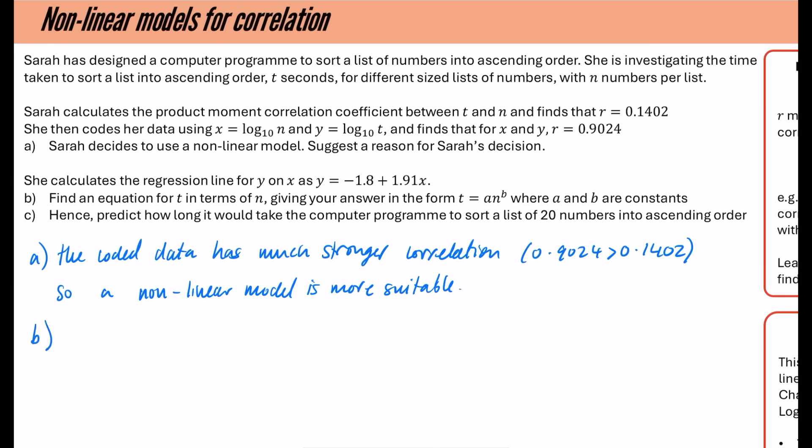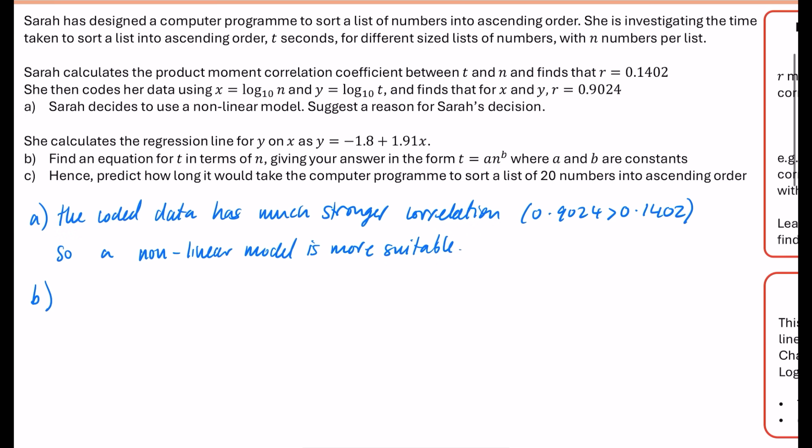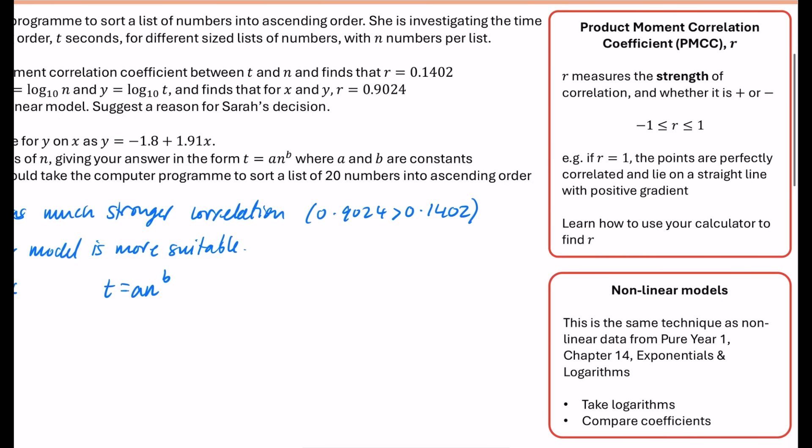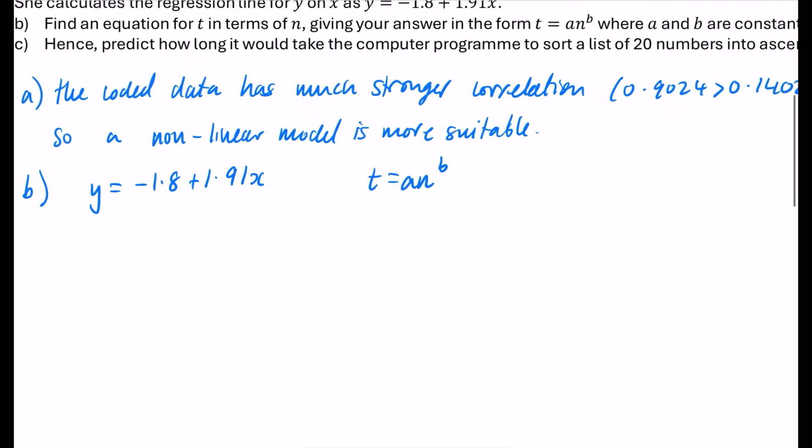So for part B of the question, it says she calculates the regression line for y on x as y equals minus 1.8 plus 1.91x. And we're going to find an equation for t in terms of n, giving our answer in the form t equals an to the power of b, where a and b are constants. So we have y equals minus 1.8 plus 1.91x. And the equation that we're going to try and find out a and b for is t equals an to the b.